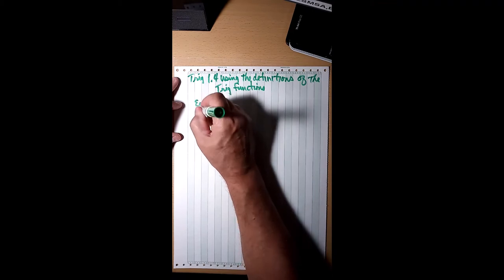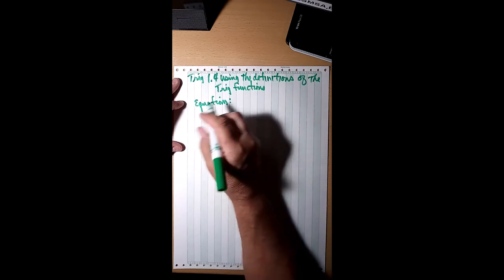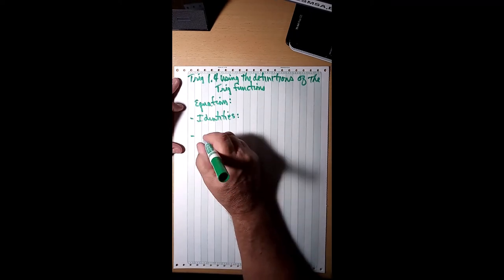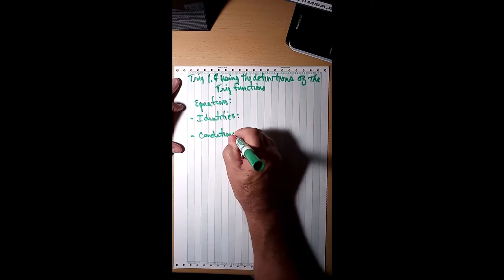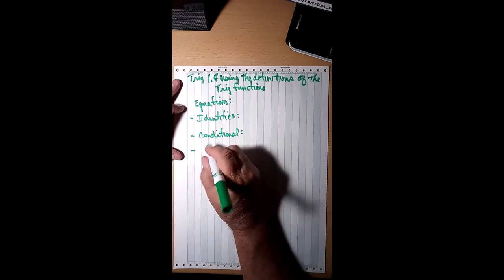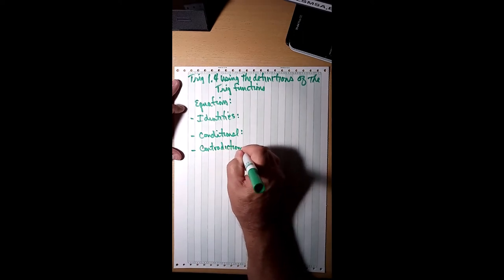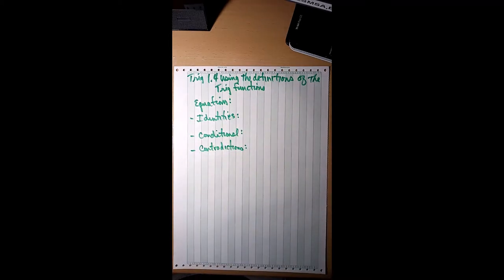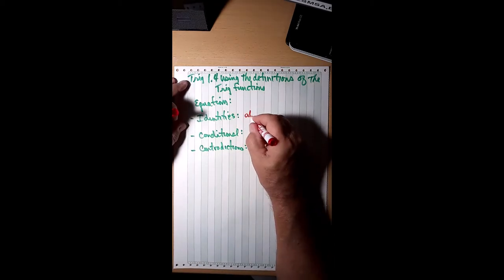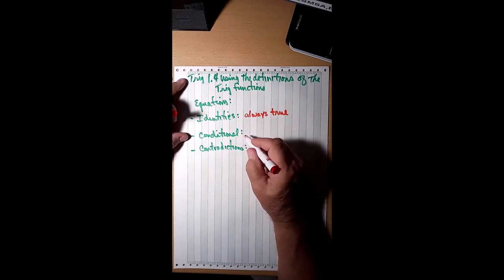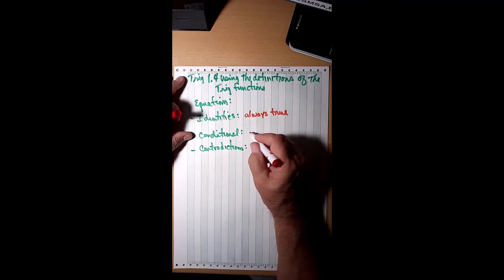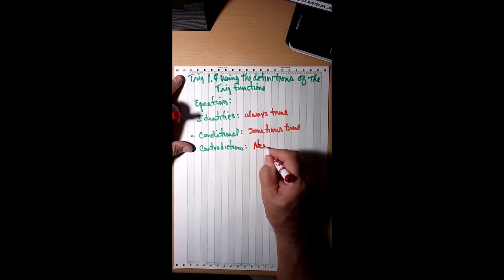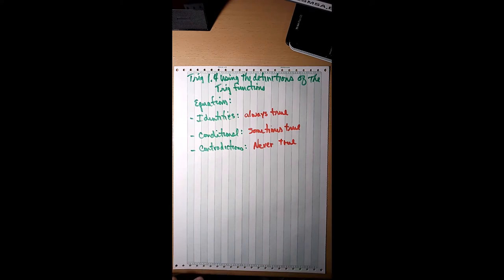There are three kinds of equations. There are identities. There are conditional equations. And there are contradictions. Identities — it doesn't matter what you put in for the variable, they are always true. Conditional equations are true if you put the right thing in for the variable, so they are sometimes true. And contradictions are, of course, never true — no matter what you put in for the variable, you won't get a true statement.